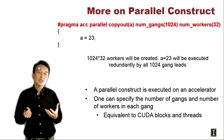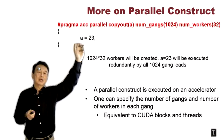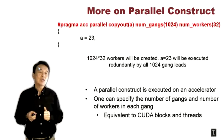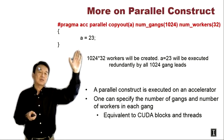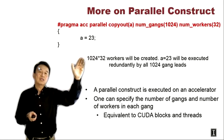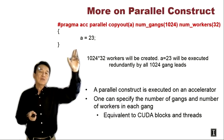Now we can look at a little more detail about what parallel regions mean. Whenever we mark a piece of code as a parallel region — here with ACC parallel and copy-out of array A — we can specify the number of gangs and the number of workers in a gang. In this case, we're saying the following code is parallel and we'd like to have 1,024 gangs, each with 32 workers, giving a total of 32K workers.